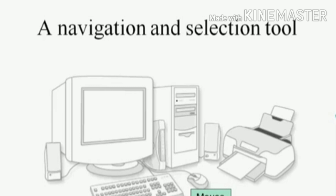Then there's the mouse. The mouse is what we call a navigation and selection tool. It allows you to move a little cursor onto different things on the screen and, by pressing a button on the mouse, select them or make something else happen on the screen. It's called a mouse because it has a little round body with a long tail connecting it to the computer, although these days sometimes it's wireless so there's no tail.